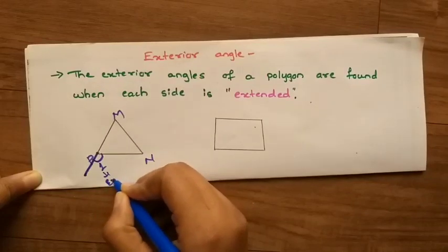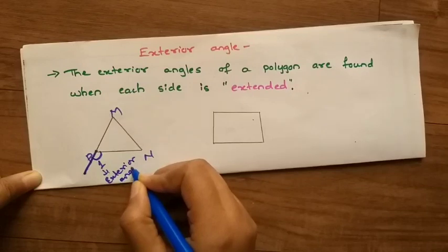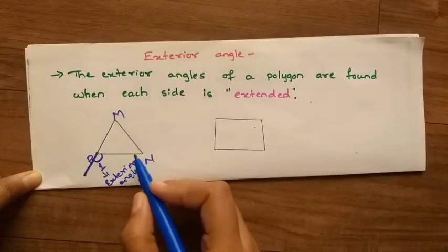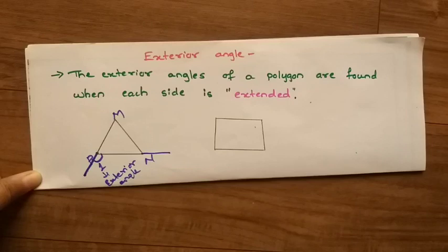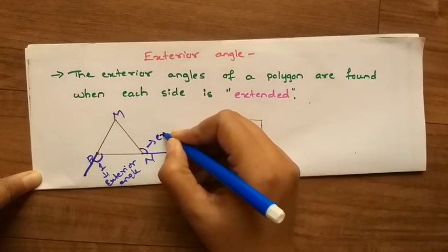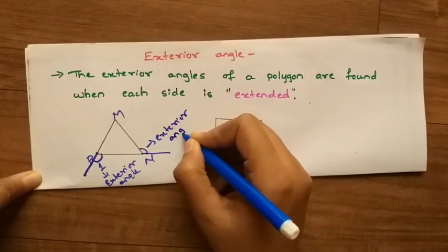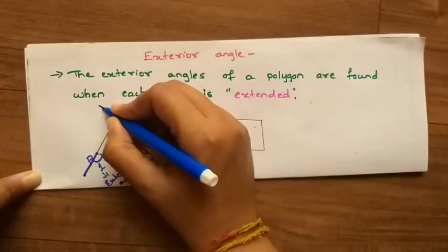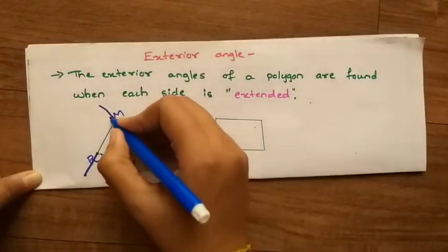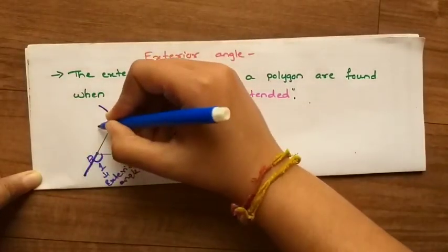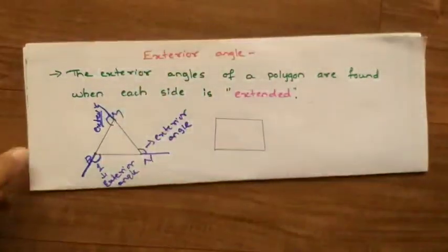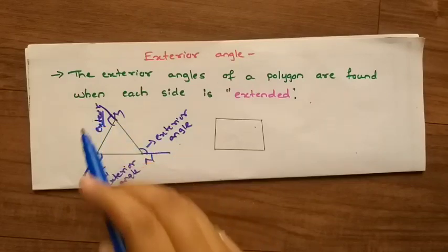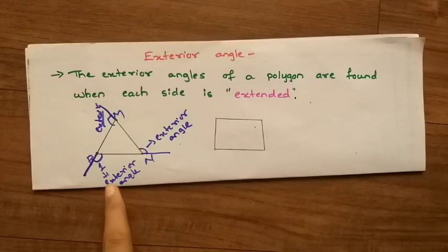Side PM is also a side, so when PM is extended it forms an exterior angle. Same with MN — when MN is extended, it forms one more exterior angle. So in total, the triangle has three exterior angles, because when each side of the figure is extended, it forms an exterior angle.